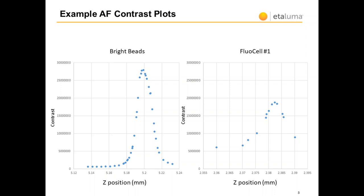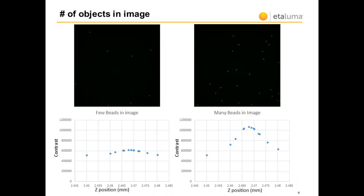Note the higher background and lower peak height for the real cell image. Here we see that the number of objects, or the amount of edges in an image, improves the autofocus result as we would expect.